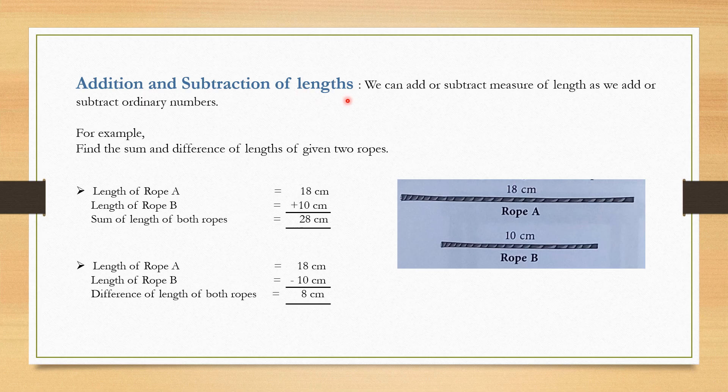Addition and subtraction of length: We can add or subtract measure of length as we add or subtract ordinary numbers. For example, find the sum and difference of length of the two given ropes. Length of rope A is 18 centimeter. Length of rope B is 10 centimeter. Sum of length of both ropes is 18 centimeter plus 10 centimeter which is 28 centimeter.